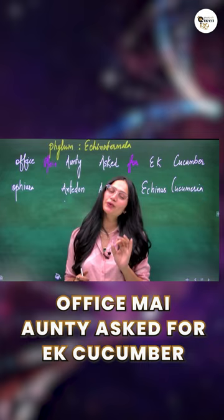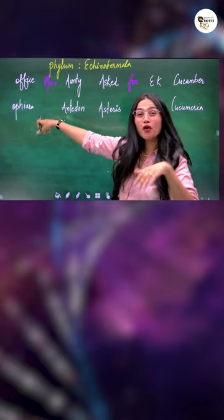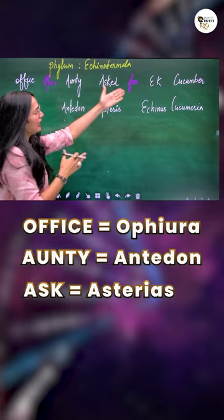Cucumber is equal to Cucumeria, A for Akinus. Office means Ophura, auntie is equal to Antedon, Asterias, Akinus, cucumber — Cucumeria.